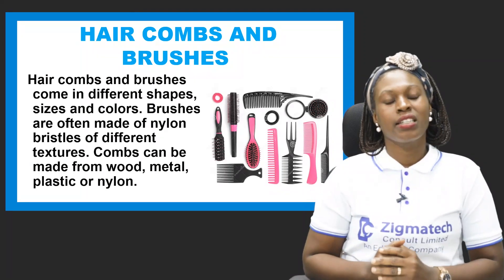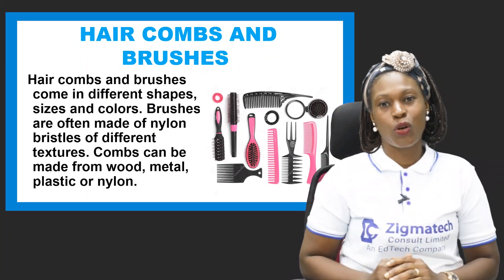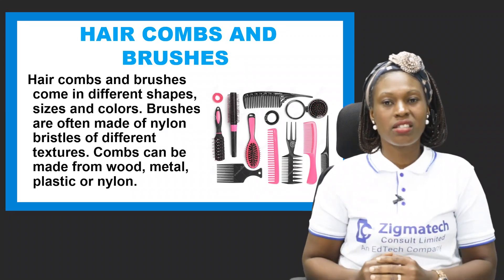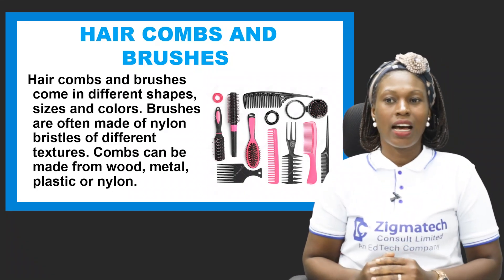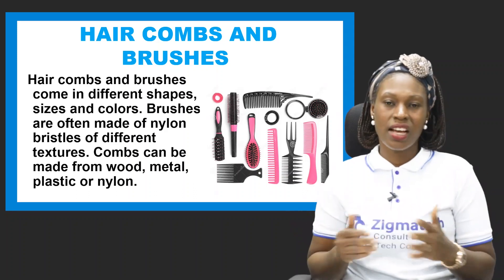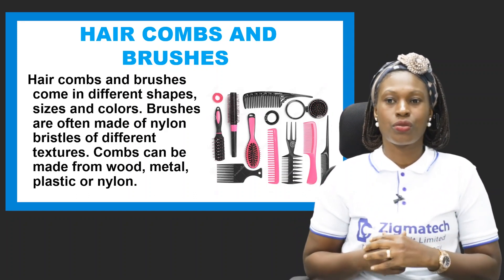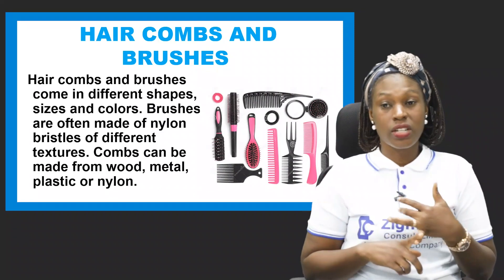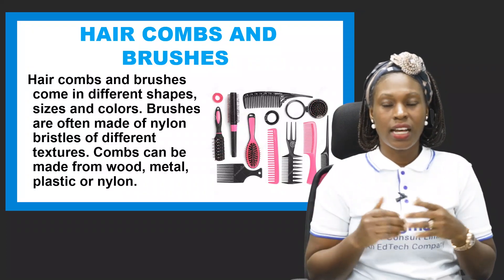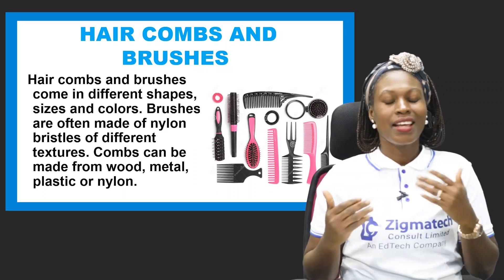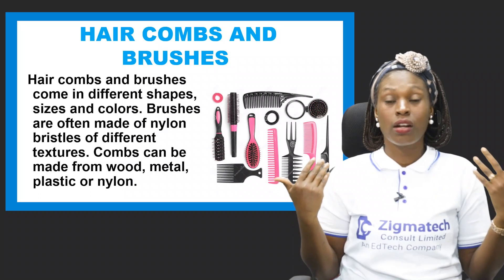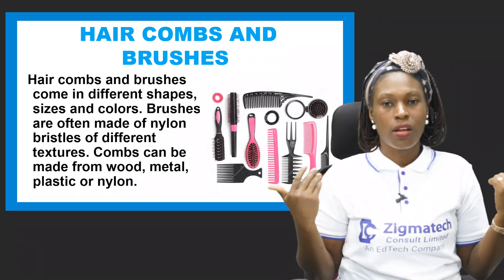We have different hair combs and brushes for different types of hair, and these come in different sizes and colors. Most brushes are often made of nylon with bristles of different textures. Combs can be made from wood, metal, plastic, or nylon — you pick the one that is suitable for you. Combs and brushes help you keep your hair looking good and beautiful.